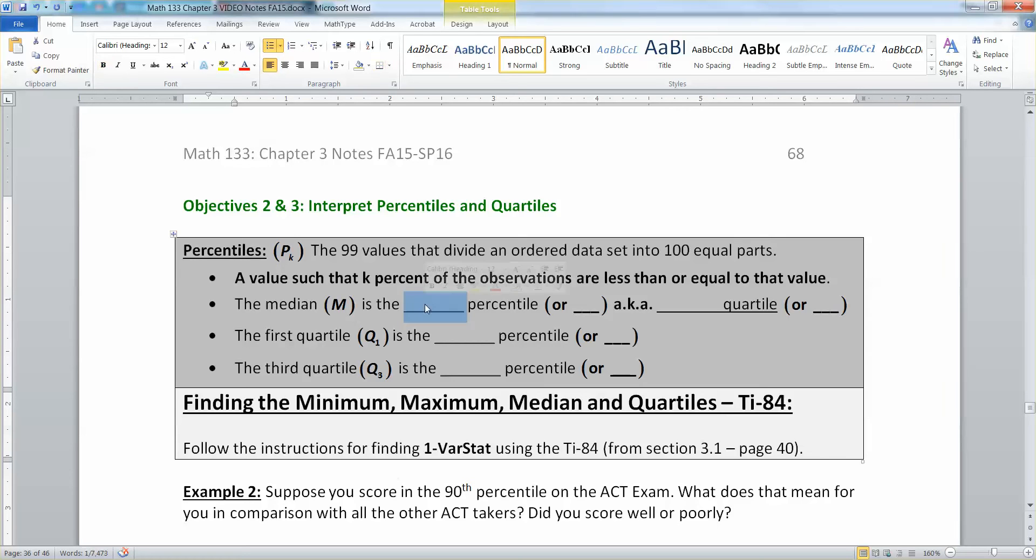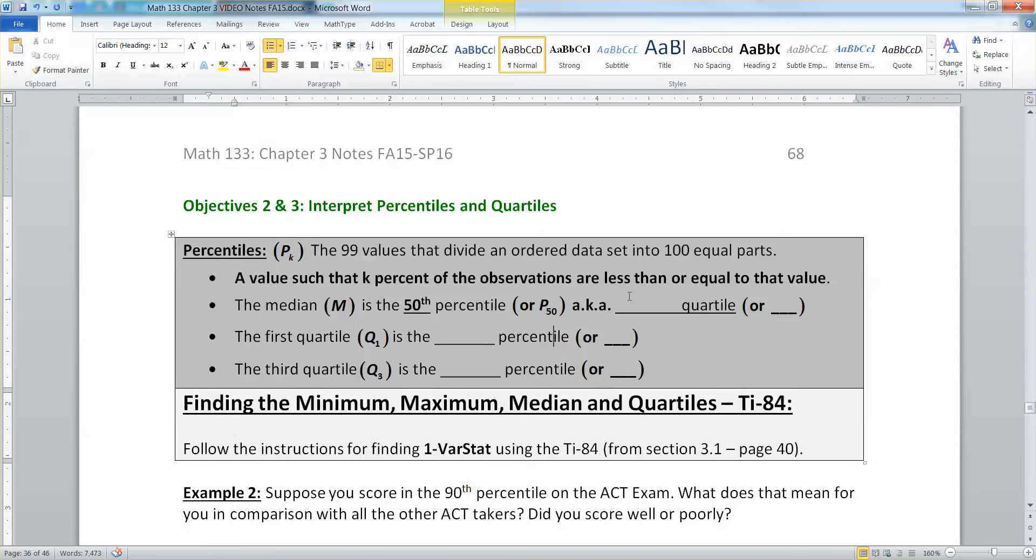If we use the symbols, it'd be capital P with a little 50 after it. There we have it, P50, 50th percentile. It's also a quartile. What happens with quartiles is they're kind of special percentiles that separate the data set into quarters. There's three quartiles that separate the data set into quarters. So there's the 25th percentile, which would be P25, which is Q1, the first quartile.